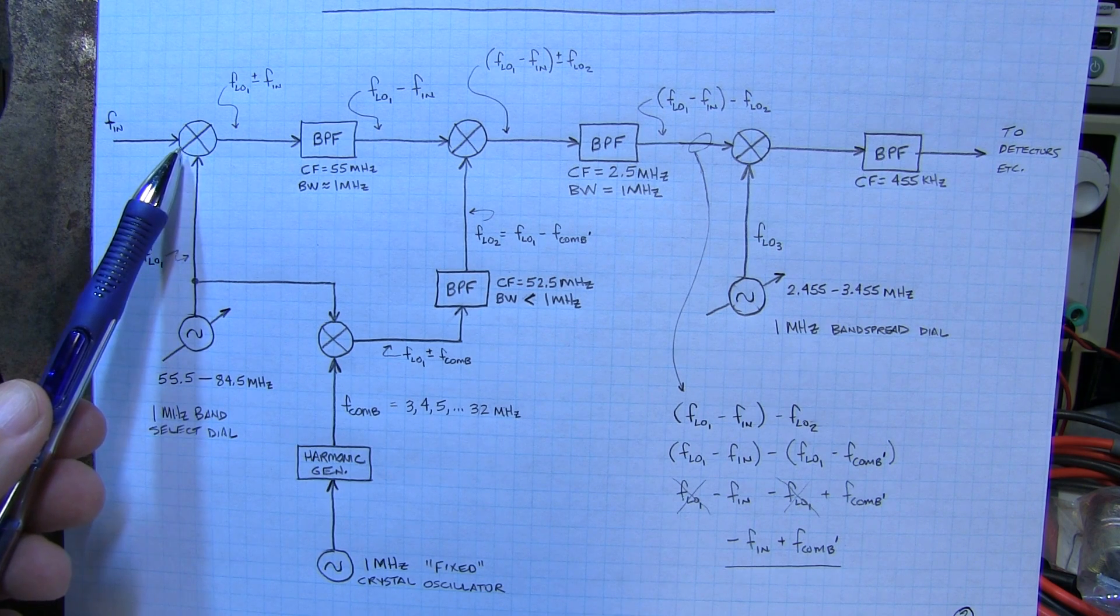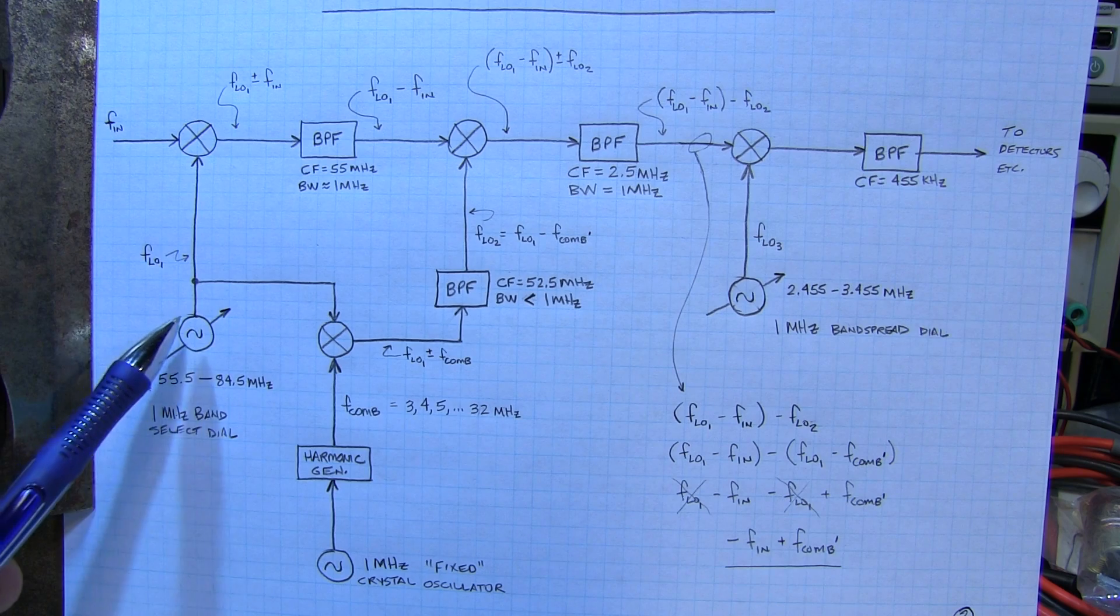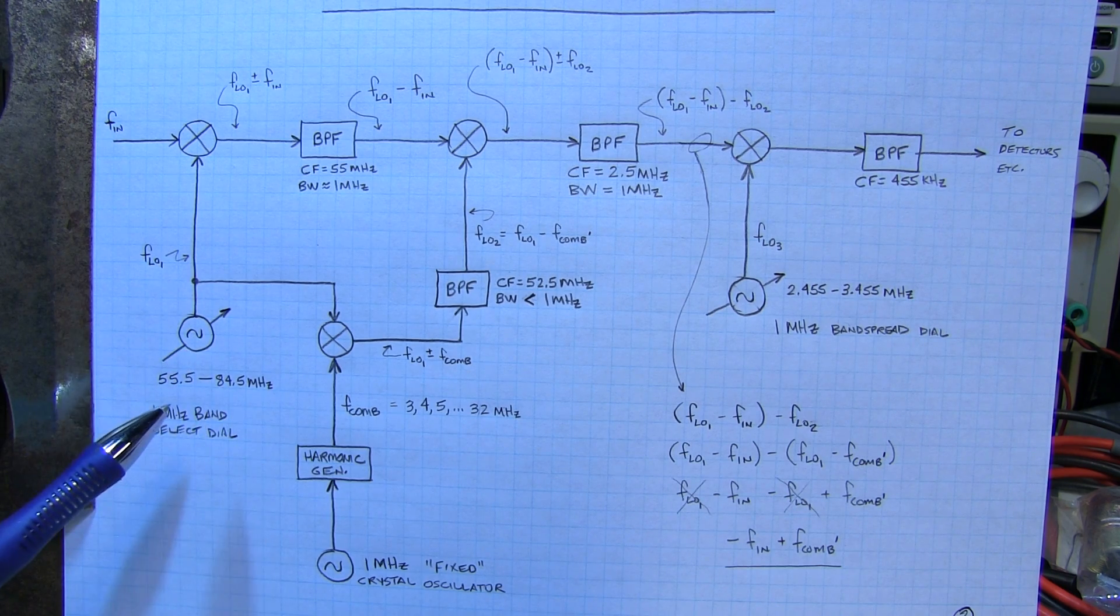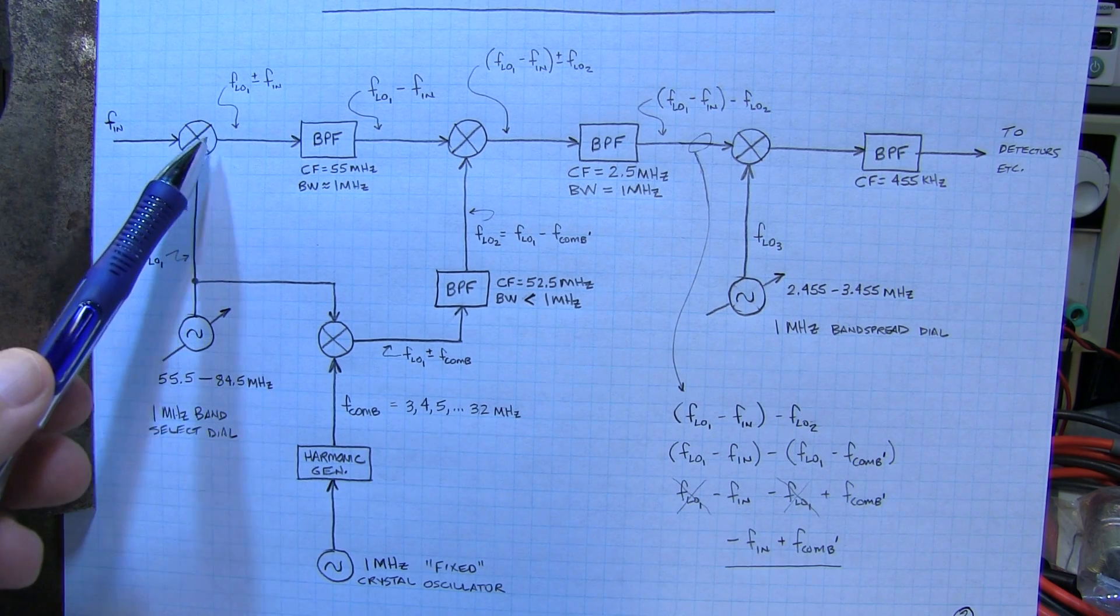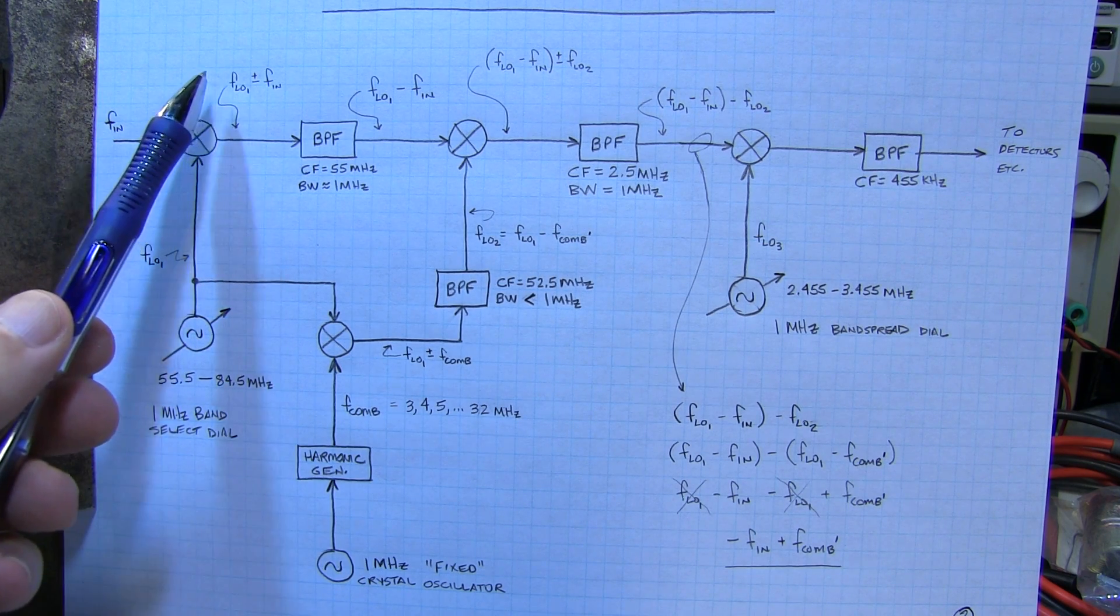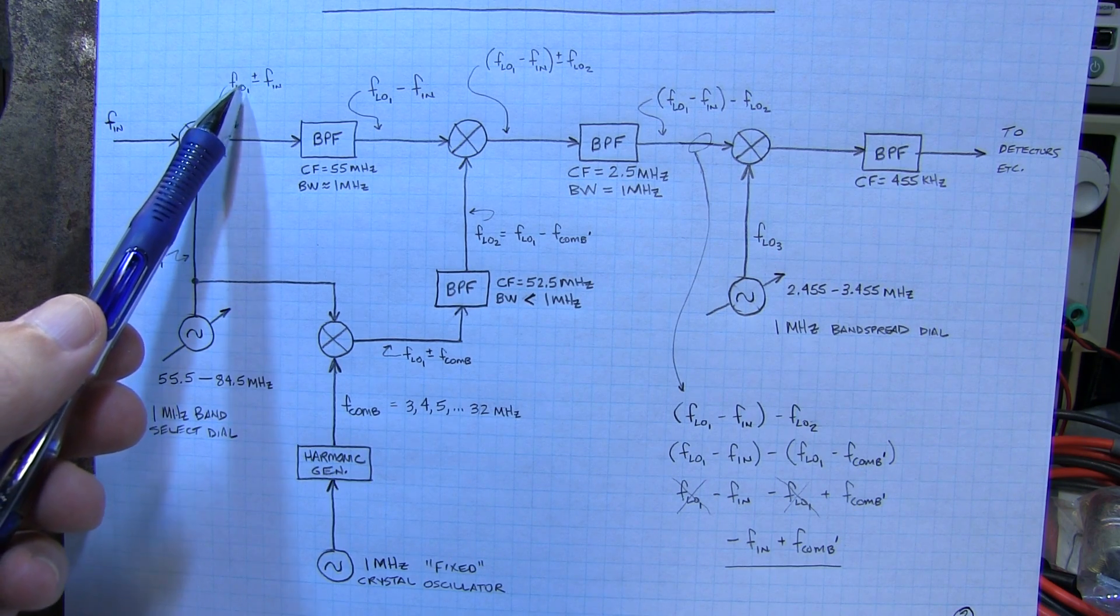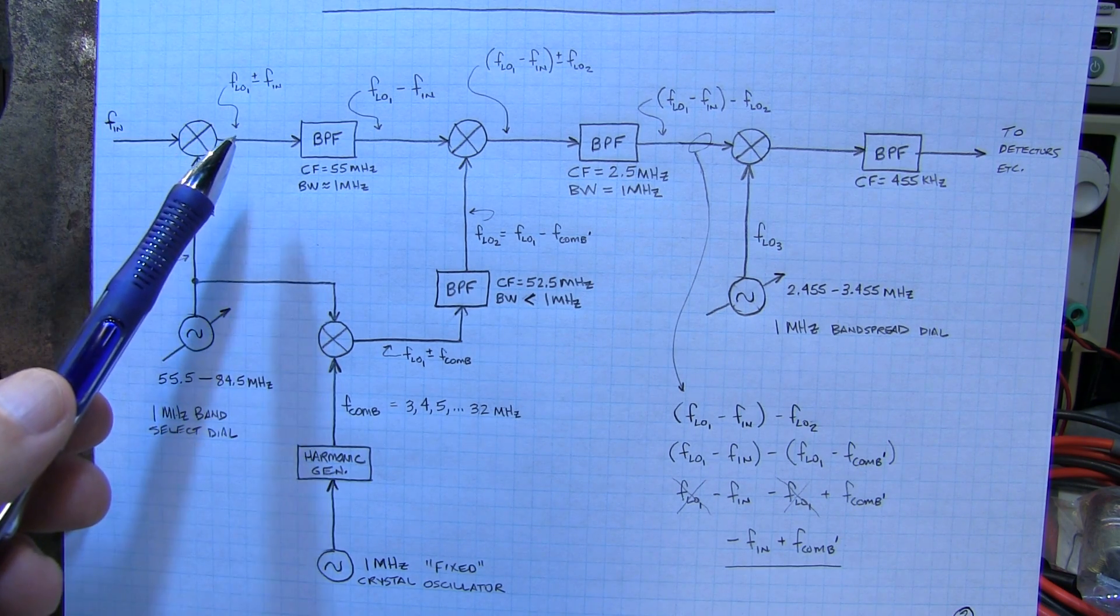That goes into the first mixer. Of course driving that first mixer also is our first local oscillator. This is the one whose drift that we're always concerned about. The output of that first mixer gives us a number of mixing components.